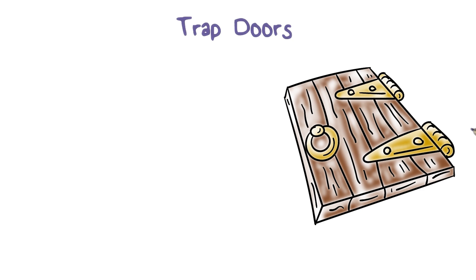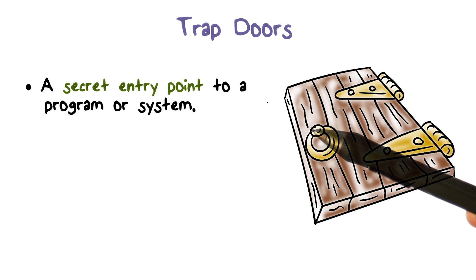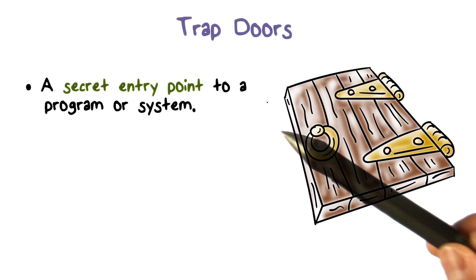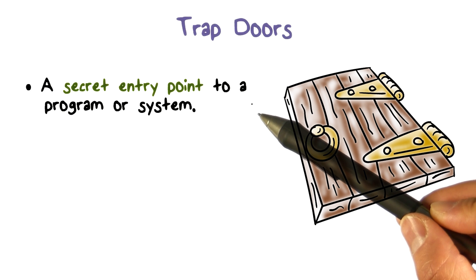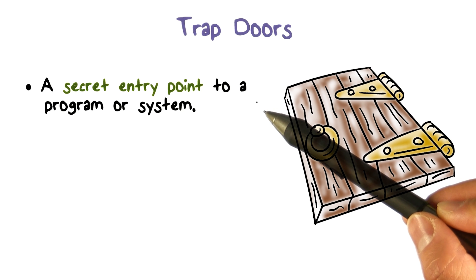Now let's discuss some more details of the various types of malware. The first is trapdoors, also known as backdoors. It is a sequence of instructions in the host program or system that has been embedded by a programmer and can be activated by an attacker. Essentially, a trapdoor provides a secret entry point to a program or system, and this secret entry point is typically known only to the programmer and the attacker.